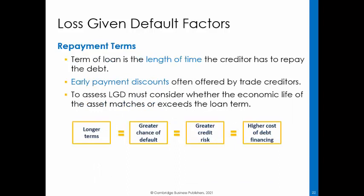The term of a loan refers to the length of time the creditor has to repay the debt. Trade creditors offer early payment discounts to control credit risk. Bank and non-bank financing can either be long-term or short-term, but the nature of the loan influences the repayment terms. Lenders ordinarily want to match the length of the loan to the useful life of the asset — the period over which the asset generates cash flows. To assess the loss given default, analysts consider the match between asset lives and liability terms. It is generally the case that interest rates on long-term debt are higher than short-term rates. The longer the term, the higher the chance of default and the greater the credit risk. To compensate for this increased risk, creditors require a higher return.